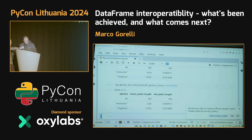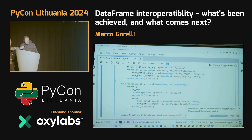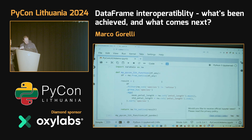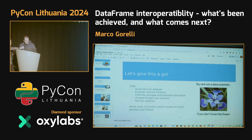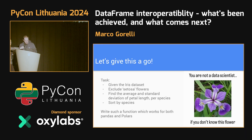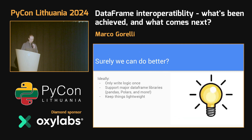As we saw, we can take a complicated-looking function with if-then statements, and we can narrow it down to just writing our logic once with a clean, clear, readable polars API. And it will be data frame agnostic. I did not think that was going to work, so I had some backup slides, which we can skip over.